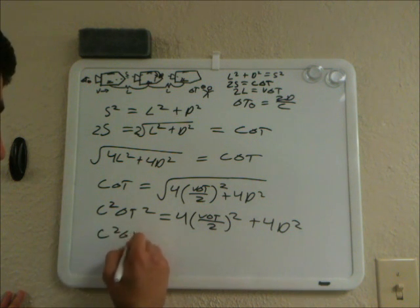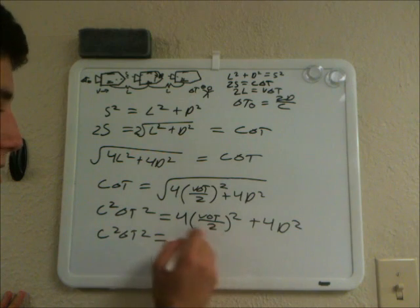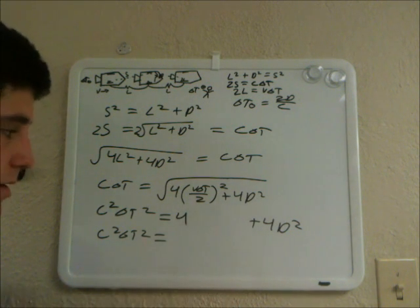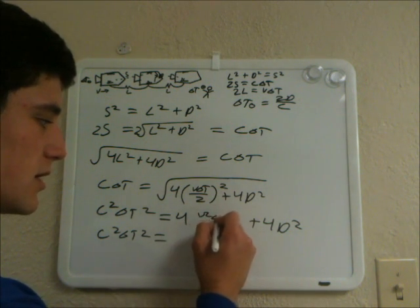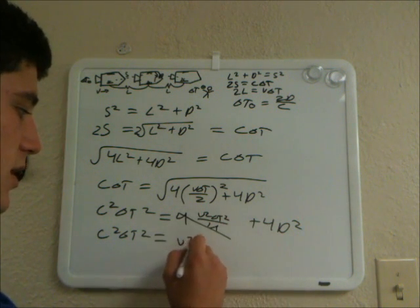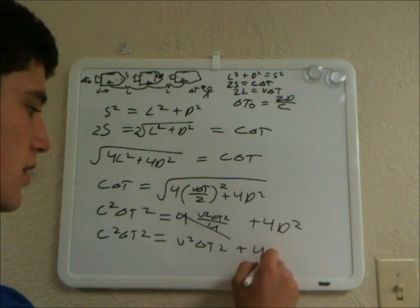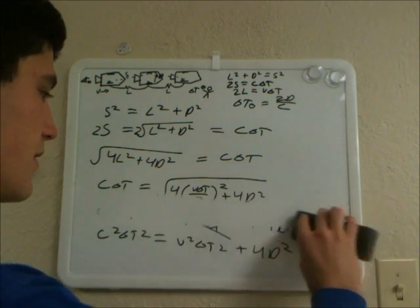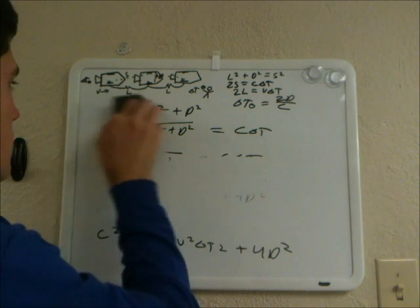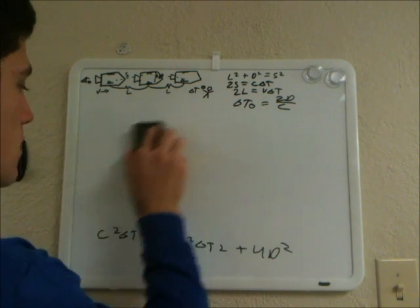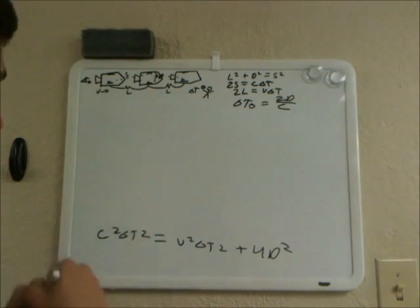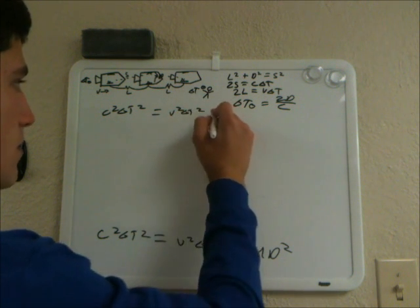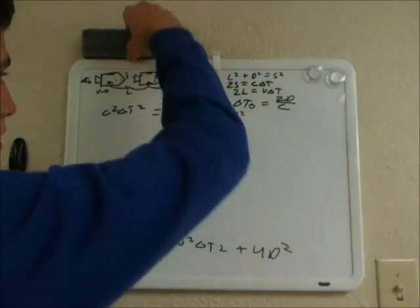Then C squared delta T squared — squaring (V delta T over 2) and distributing: that term becomes V squared delta T squared over 4, and the 4's cancel. So we get C squared delta T squared equals V squared delta T squared plus 4D squared.